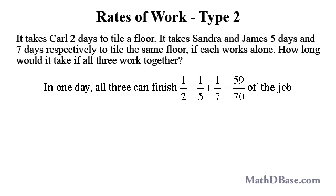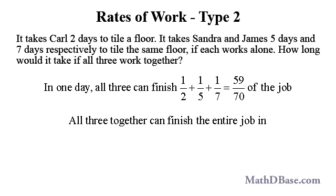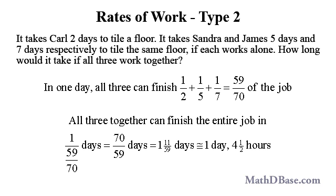Following the procedure of the last example, the entire job can be completed by all three people in 1 over 59/70 days, or 70 over 59 days, which simplifies to 1 and 11/59 days, or about one day and four and a half hours.